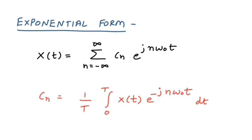In the continuous time Fourier series we have two topics. The first topic is the trigonometry form of the Fourier series, which is covered in the previous video, and the second topic is the exponential form of the Fourier series, which is going to be covered in this video.